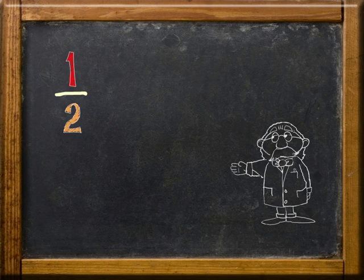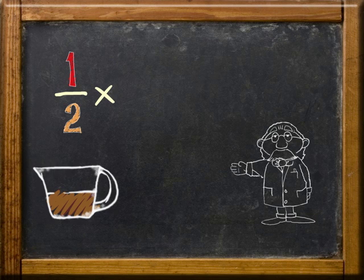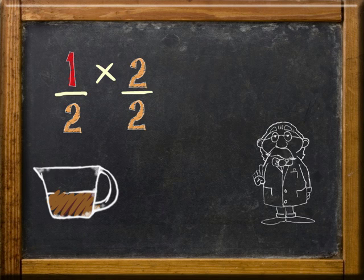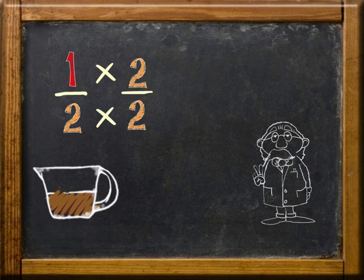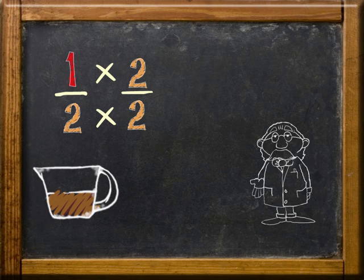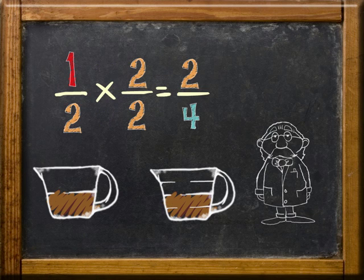So, if I multiply one-half cup packed brown sugar by two over two, my numerator one is multiplied by two, and my denominator two is also multiplied by two. This makes my new numerator two, and my new denominator is four. My resulting equivalent fraction is two-fourths cup packed brown sugar.